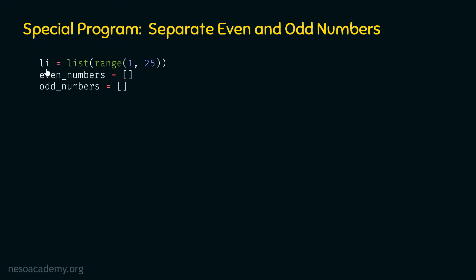The next step is to iterate over this list and check each item. We write: for item in li. The item variable will receive each item of the list one at a time. Within this for loop, we check if item mod 2 is equal to 0. If the item is divisible by 2, it means that specific item is an even number, and hence we must append that item to the even numbers list.